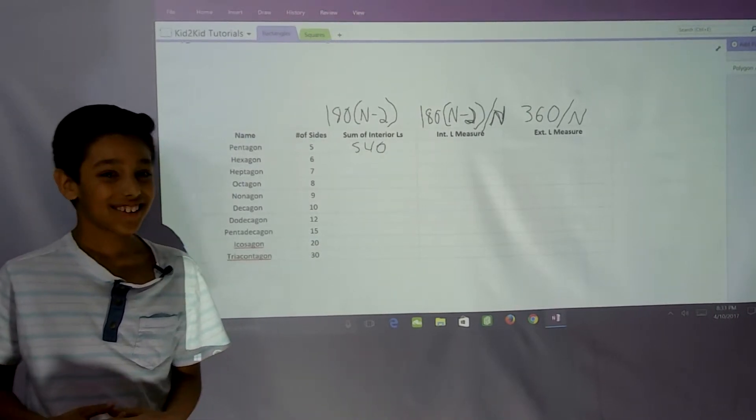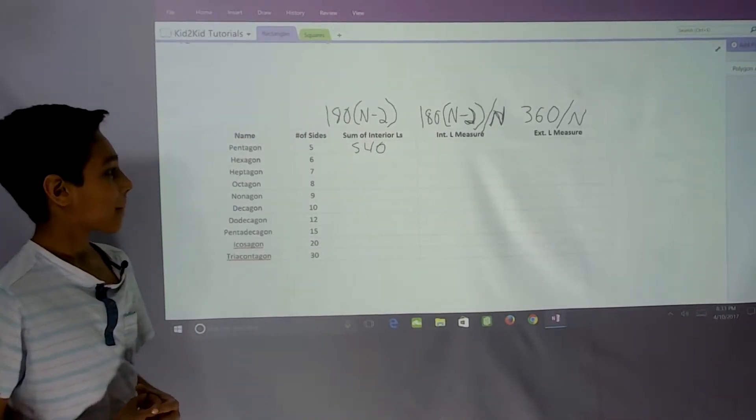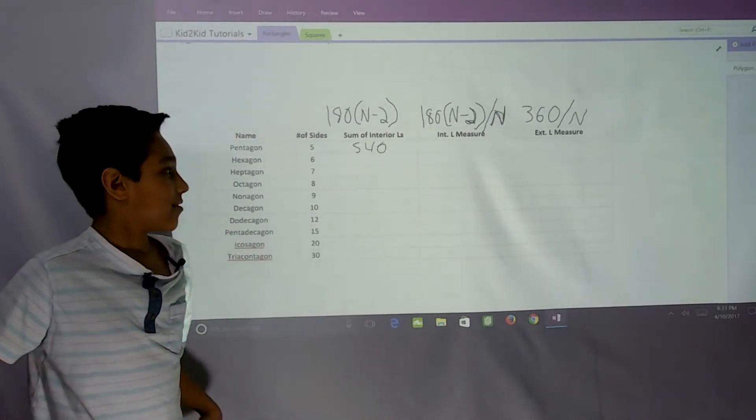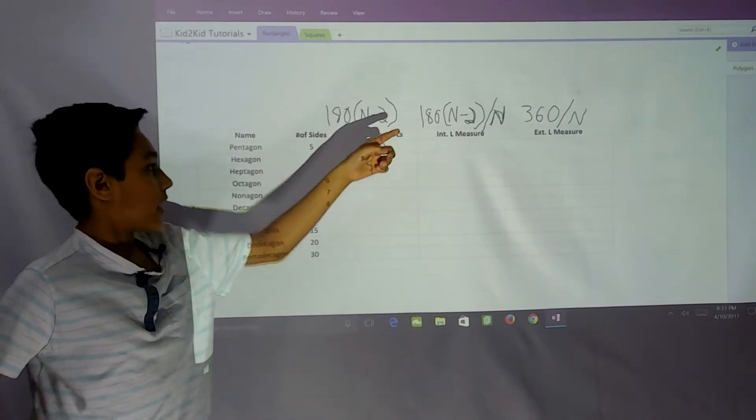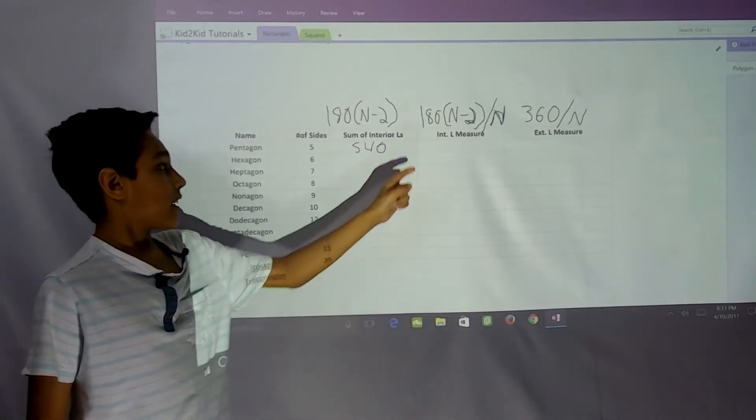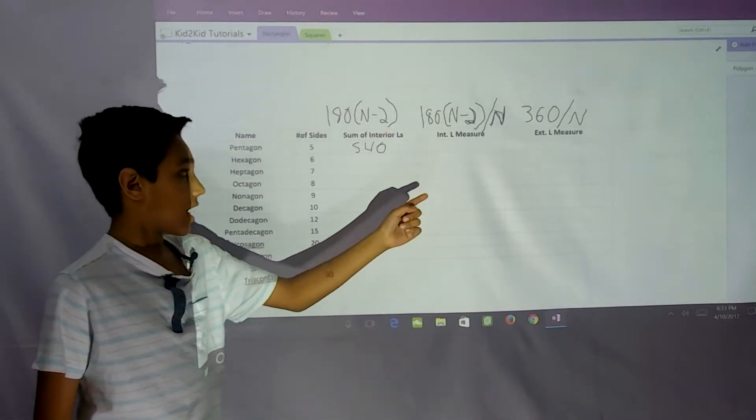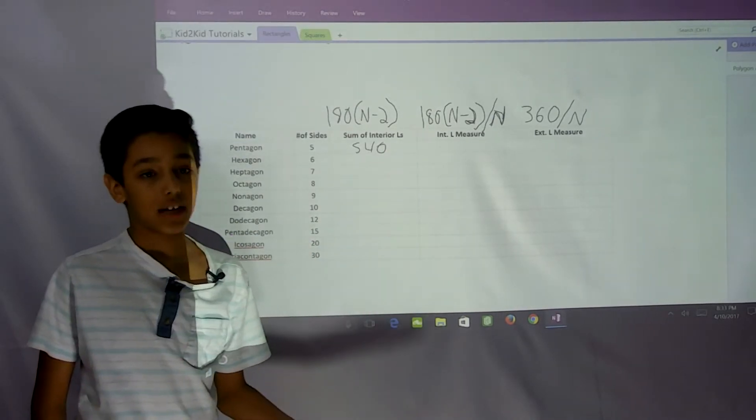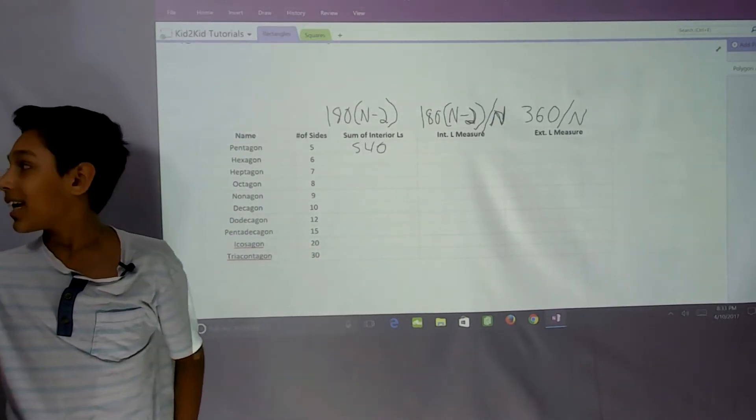For the interior angle measure, we plug in 5 for n for both n's. We get 180 times (n minus 2), which is 3, divided by n, which is 5, and we get 108 degrees.